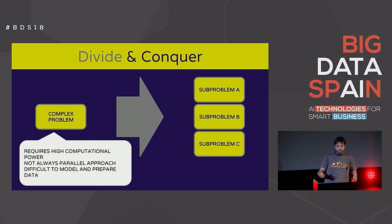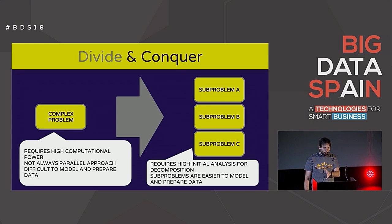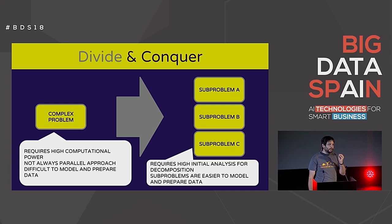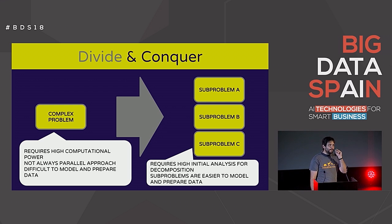We can replicate this natural behavior by doing the same. We have a complex problem, but no single individual is solving all of it. They go for easier sub-problems, because the complex problem requires high computational power and it's not always parallelizable. They are also difficult to model and prepare the data — that's why you need incredibly good data scientists to model a complex problem.